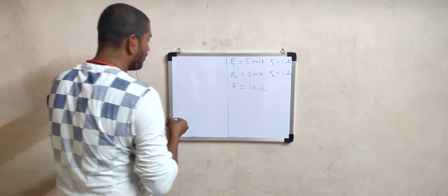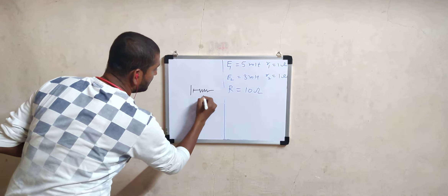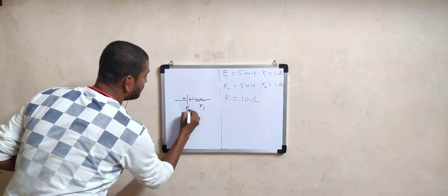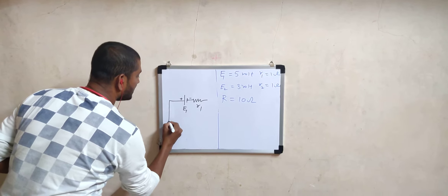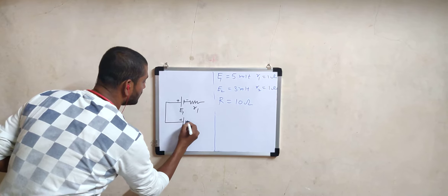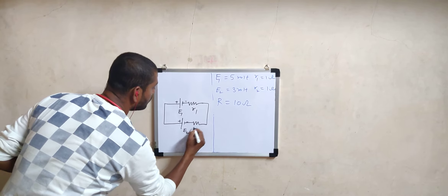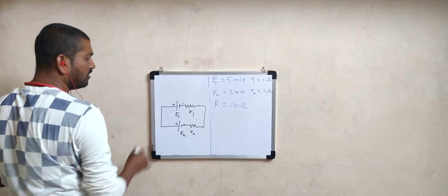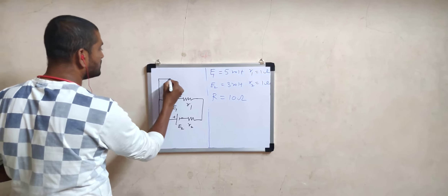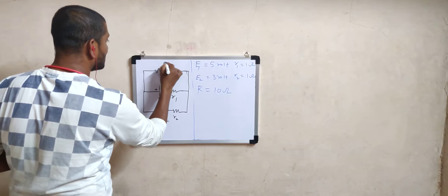The two cells are in parallel combination. Imagine the first cell with internal resistance R1, with polarities positive and negative, and EMF E1. It is connected in parallel with the second cell of EMF E2, positive and negative, with internal resistance R2. These two are in parallel combination, and across this combination an external resistance R is connected.